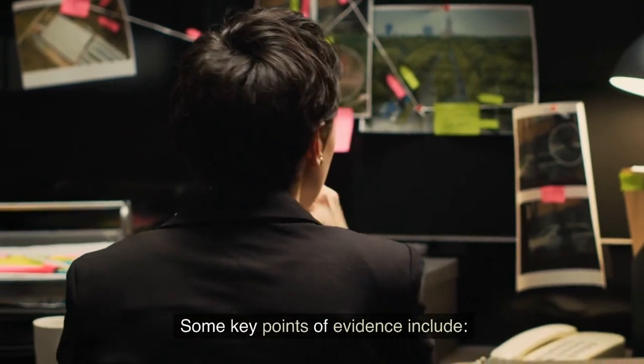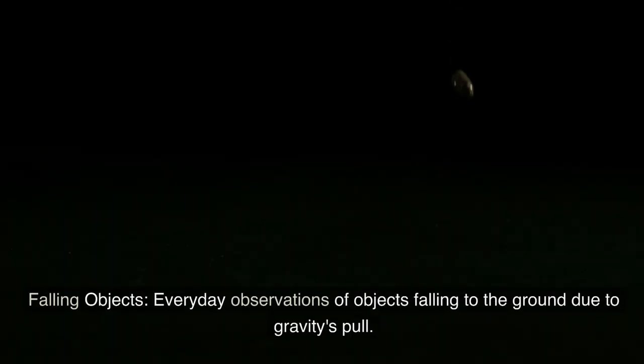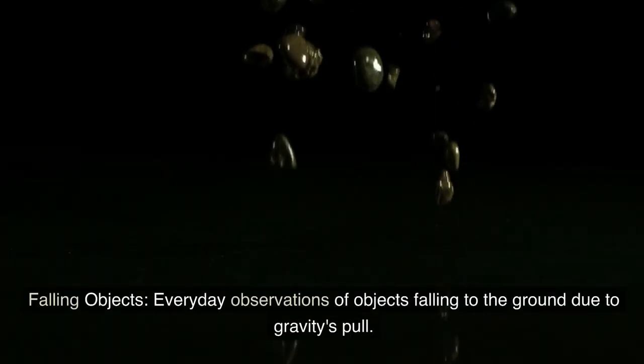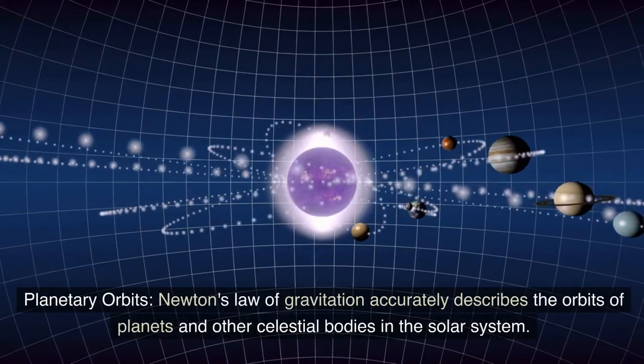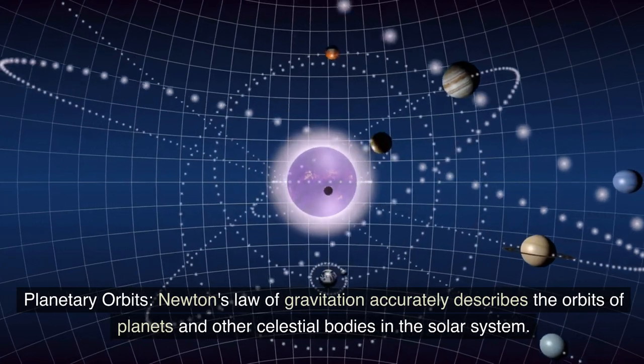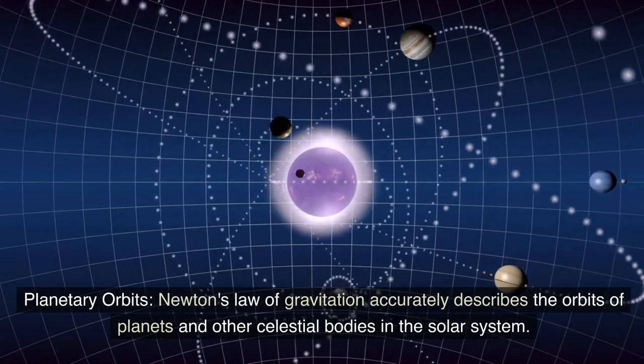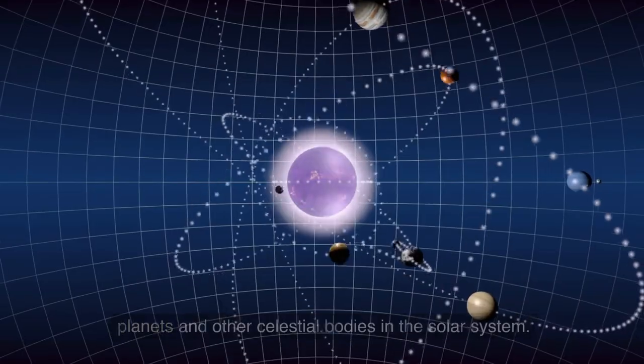Some key points of evidence include falling objects, everyday observations of objects falling to the ground due to gravity's pull, planetary orbits. Newton's Law of Gravitation accurately describes the orbits of planets and other celestial bodies in the solar system.